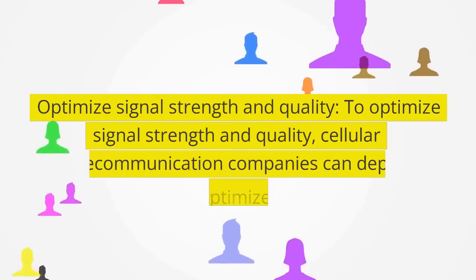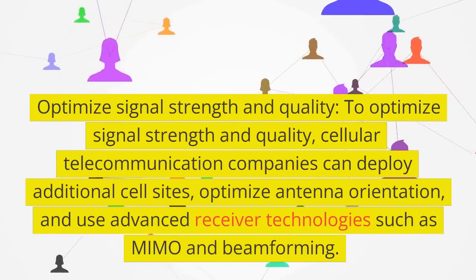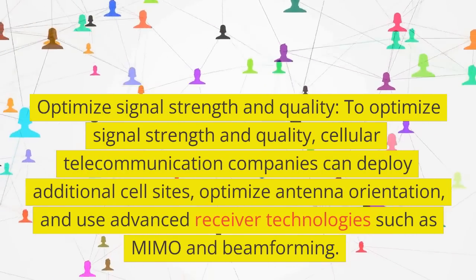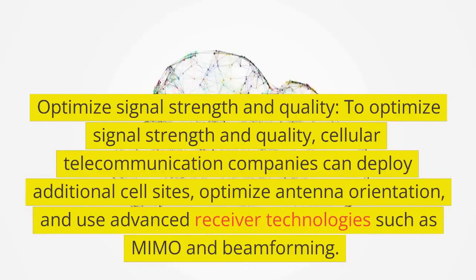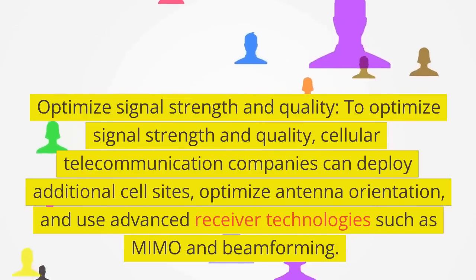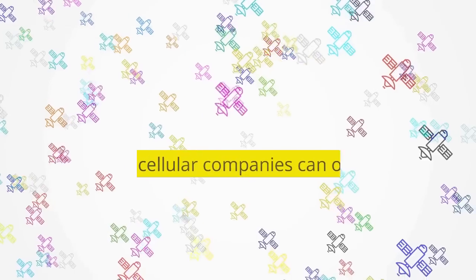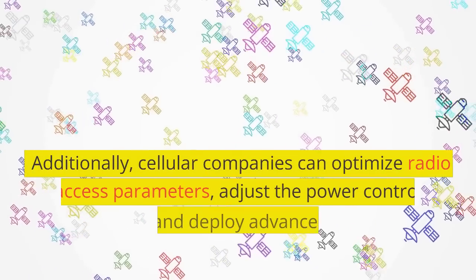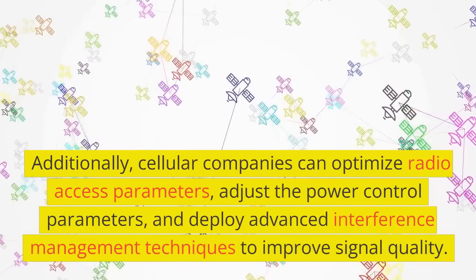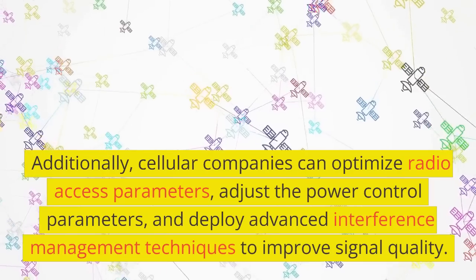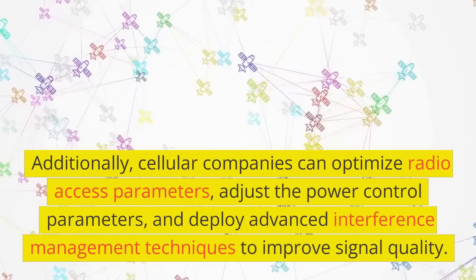Optimize Signal Strength and Quality: To optimize signal strength and quality, cellular telecommunication companies can deploy additional cell sites, optimize antenna orientation, and use advanced receiver technologies such as MIMO and beamforming. Additionally, cellular companies can optimize radio access parameters, adjust the power control parameters, and deploy advanced interference management techniques to improve signal quality.